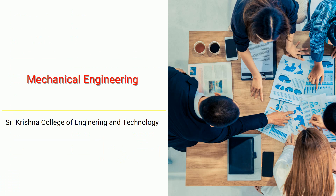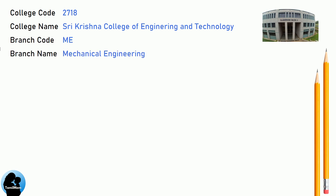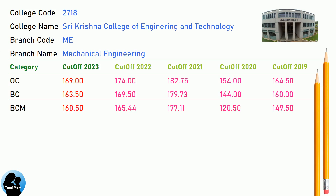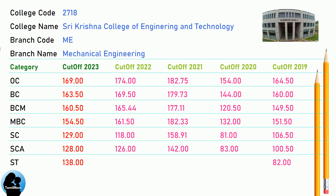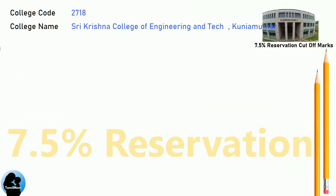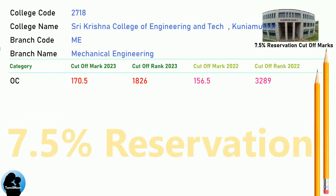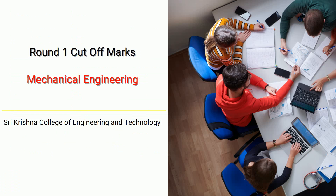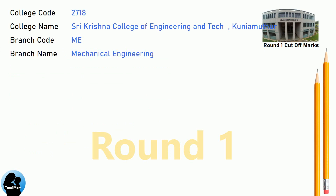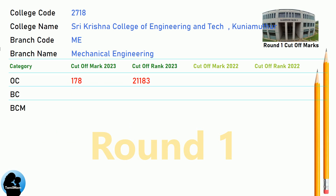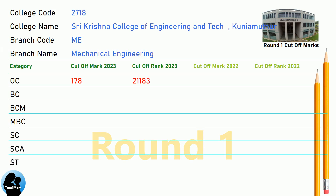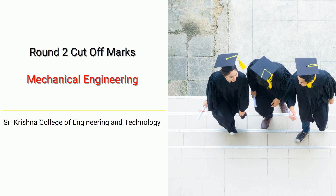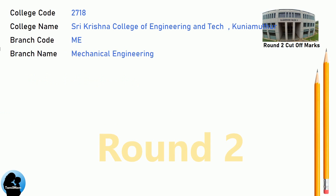DNEA Cut-Off for Shri Krishna College of Engineering and Technology in Mechanical Engineering. DNEA 7.5 Reservation Cut-Off. DNEA Round 1 Cut-Off. DNEA Round 2 Cut-Off for Shri Krishna College of Engineering and Technology in Mechanical Engineering.